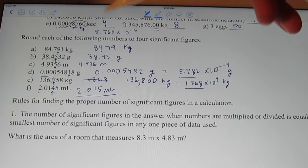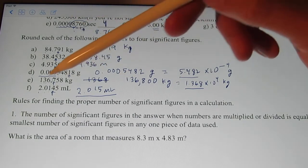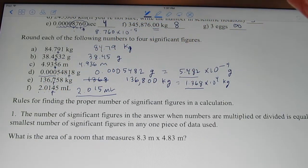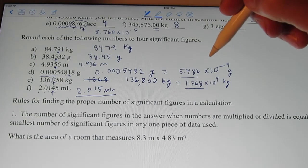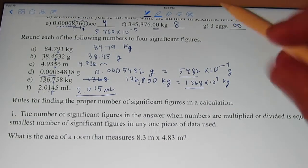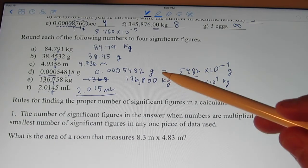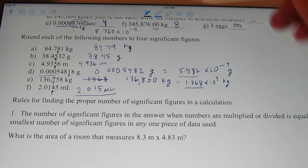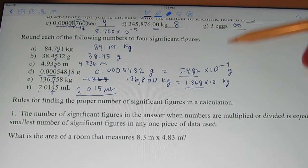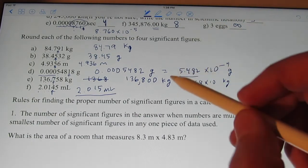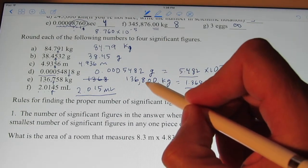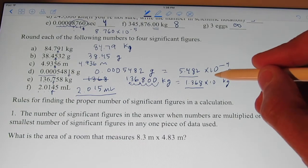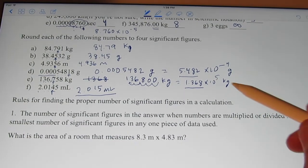Welcome back, kiddos. Before we begin today's discussion on rules for finding the proper number of sig figs in a calculation, I want to quickly clear up something that I messed up on in the last video. It was this problem right here where I said that this number is equal to 1.368 times 10 to the 4th. Let's go ahead and erase that 4th power right there. It's not 10 to the 4th. Let's count over again. 1, 2, 3, 4, 5. So my bad. That should be 1.368 times 10 to the 5th kilograms.